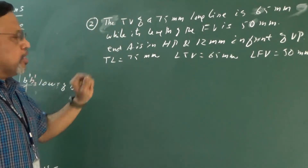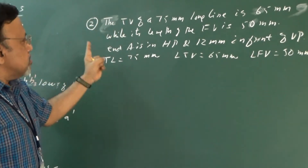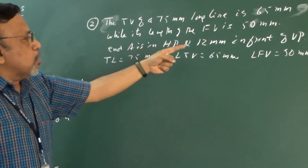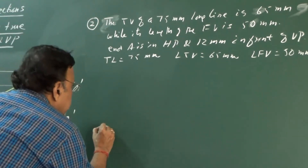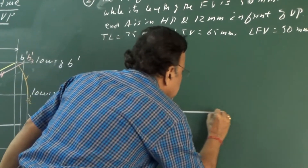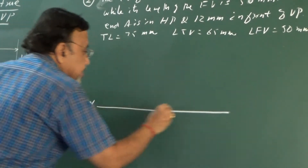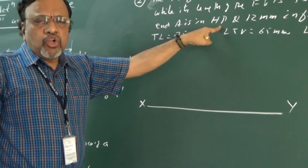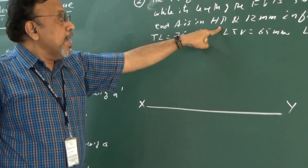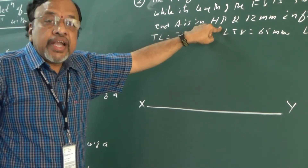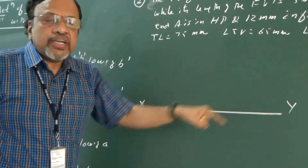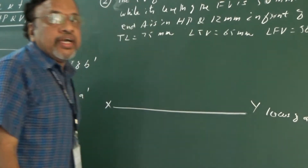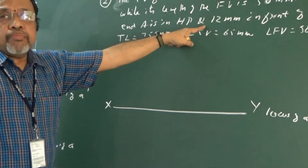I have also given the true length as 75. One more piece of data: end A is in HP and 12 mm in front of VP. So let us first draw the XY line. Now, let us locate end A. If A is in HP, it means the locus of A dash should be on XY. I will mark the locus of A dash, and it is 12 mm in front of VP.